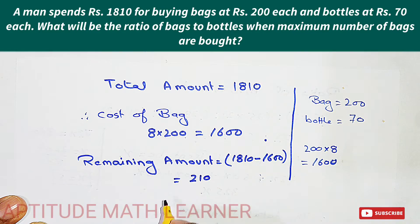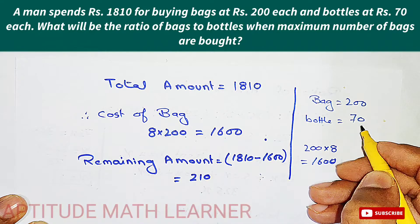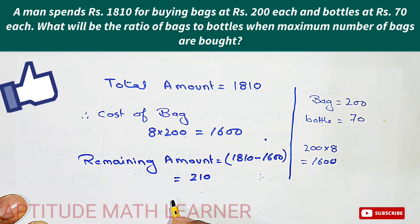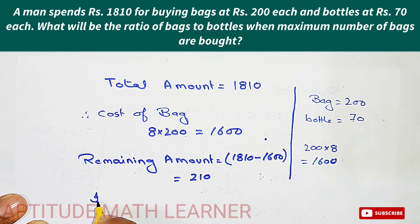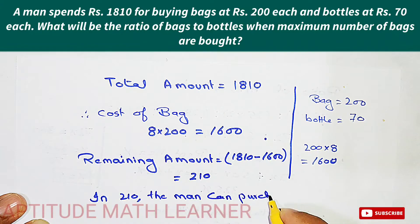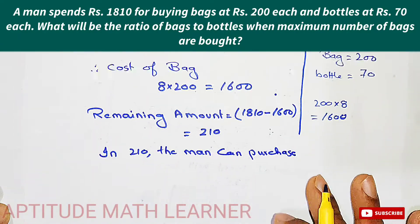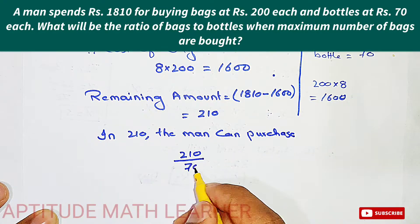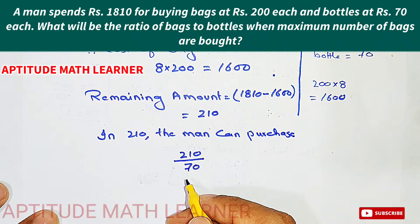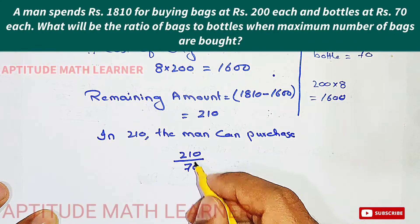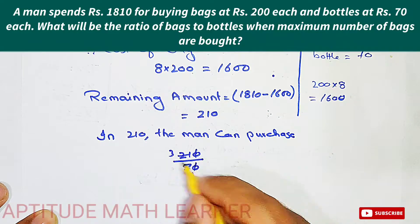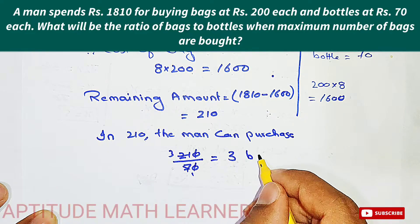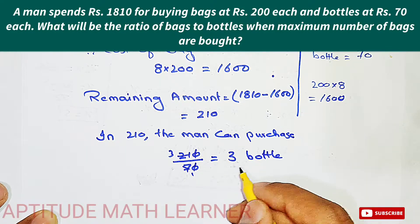Each bottle costs 70 rupees. So out of 210 rupees, the number of bottles he can purchase is 210 divided by 70, which equals 3. So the number of bottles purchased is 3.